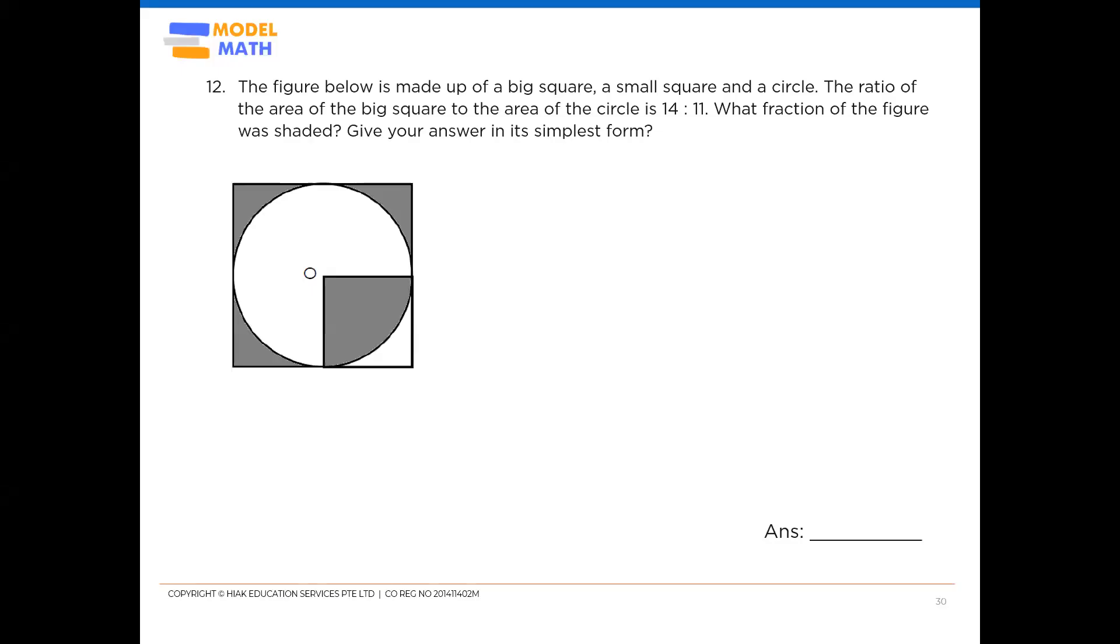The figure below is made up of a big square, a small square and a circle. The ratio of the area of the big square to the area of the circle is 14 to 11. So let's record down the ratio first. Big square to the circle inside, 14 is to 11.